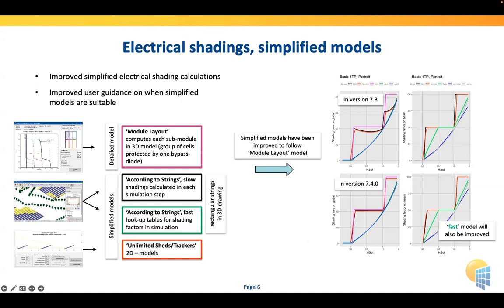These simplified models have been matched more and more to the module layout detailed calculation. On the right side you see an example with a twin half cell single row — the electrical shading goes in steps, and as parts of cells are shaded you lose the production of those sub-modules entirely. In version 7.3 there was a slight discrepancy between the simplified models and the module layout, and we have been correcting that to get more precise results with the simplified models as well.